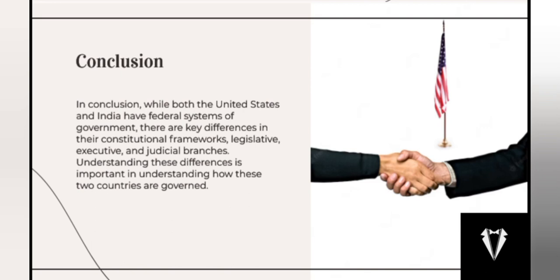In conclusion, these are just a few key differences between US and Indian federalism. Federalism is a complex system of government and there is no one-size-fits-all approach. The US and India have different ways of dividing power between the national and state levels, and these differences reflect the historical, cultural, and political context of the two countries.